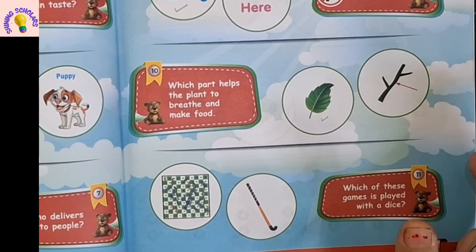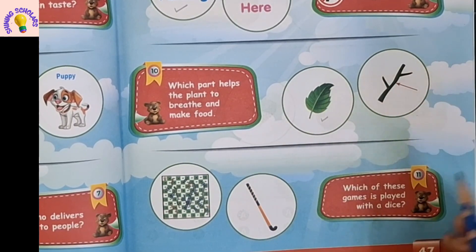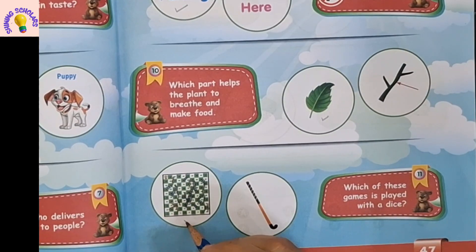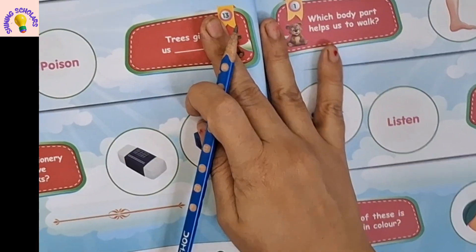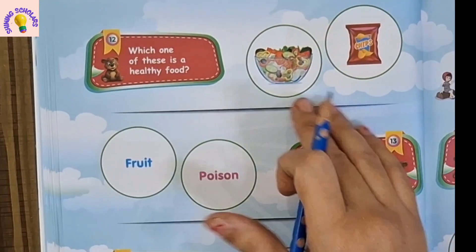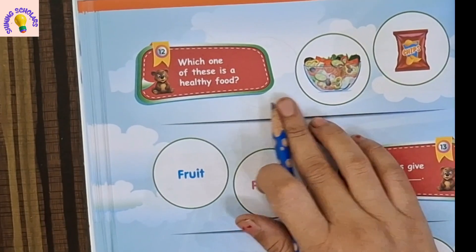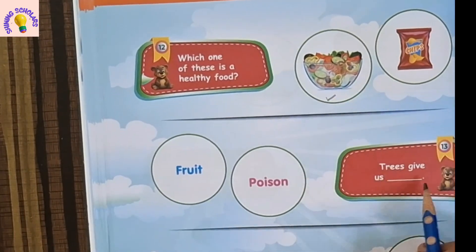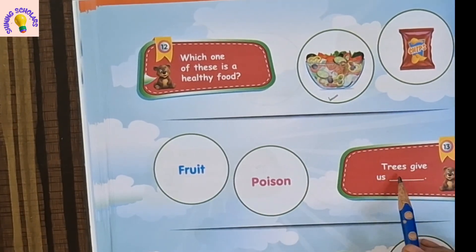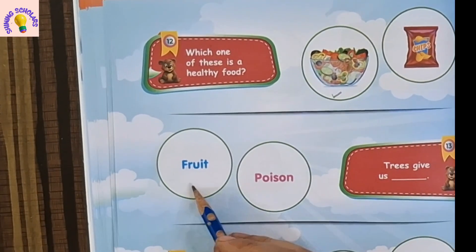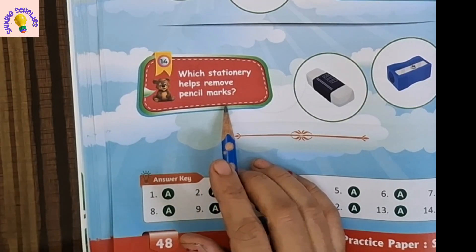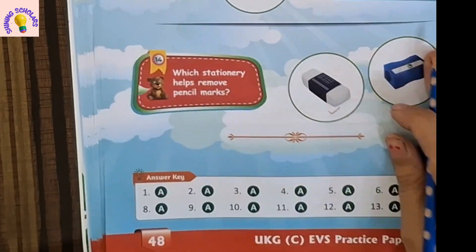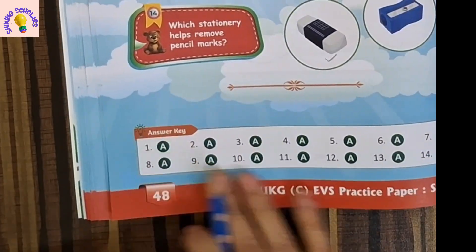What does this sign mean? That is no parking — parking is not allowed in this area. Which part helps the plant to breathe and make food? This is the leaves — leaves are the kitchen of the plant. Which of these games is played with a dice? Snakes and ladders — it's an indoor game. Which one of these is a healthy food? This is a salad; salad is a healthy food. Trees give us fruit. Which stationery helps remove pencil marks? Eraser. At the end answers are given.